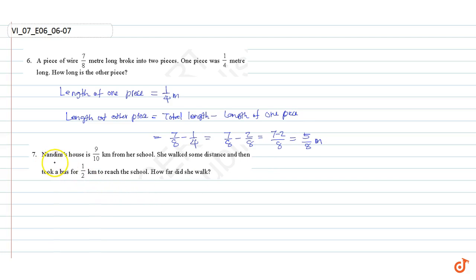Question number seven: Nandini's house is nine by ten kilometer from her school. She walked some distance and then took a bus for half kilometer to reach the school. How far did she walk?